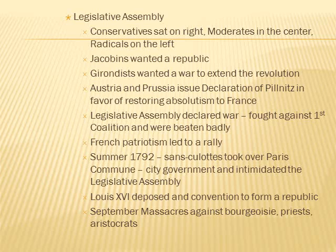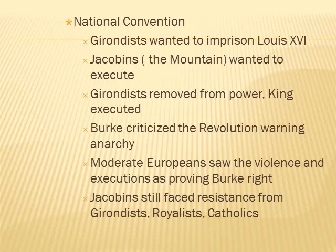In the summer of 1792, the sans-culottes — the working class — took over the Paris Commune, the city government, and the Paris Commune intimidated the Legislative Assembly. Louis XVI was deposed and a convention was formed to create a republic. The September Massacres took place against the bourgeoisie, the priests, and the aristocrats. In the National Convention, the Girondins wanted to imprison Louis XVI but the Jacobins, under the leadership of the Mountain, wanted to execute him. The Girondins were removed from power and the king was executed.